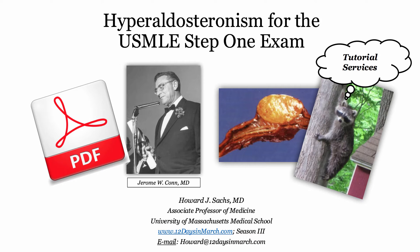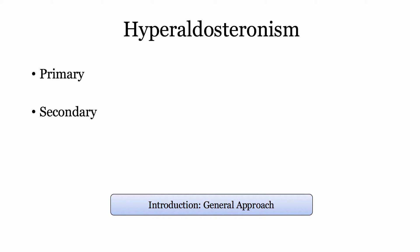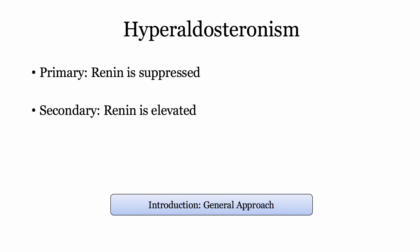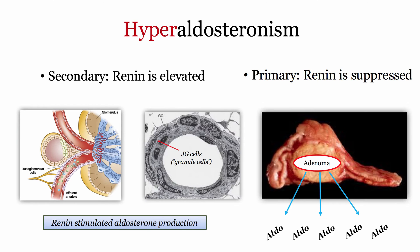Let's open our discussion by framing hyperaldosteronism in its appropriate context. You need to start developing the love of broad categories to keep your voluminous materials organized and easily retrievable come test day. When experienced clinicians hear the term hyperaldosteronism, it is quickly thought of as being primary or secondary. What's the renin doing? Is renin driving the bus, or has aldosterone gone rogue with autonomous secretion? With autonomous secretion, feedback loops will suppress renin secretion.